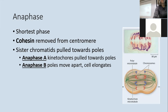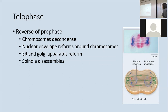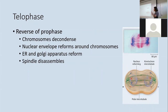Telophase is essentially prophase in reverse. The chromosomes that were super condensed start to relax. The double nuclear membrane is rebuilt around each set of chromosomes, remaking the nucleus. The Golgi apparatus and endoplasmic reticulum are reassembled on each side around the nuclei, and then the spindles disassemble. All the tubulin is taken back apart and everything done in prophase is undone.